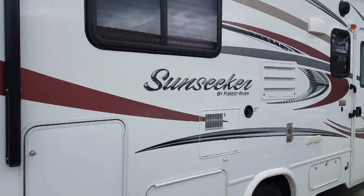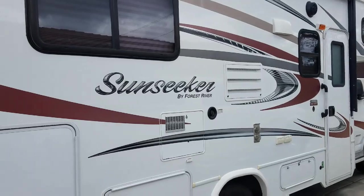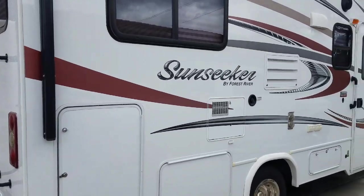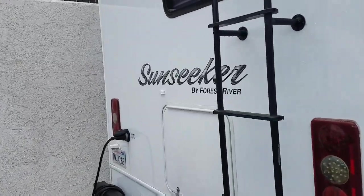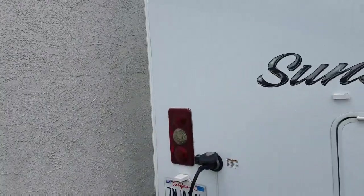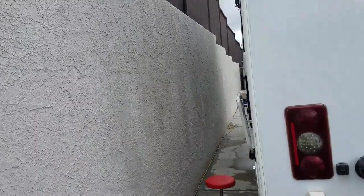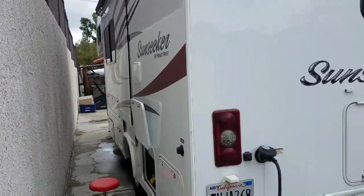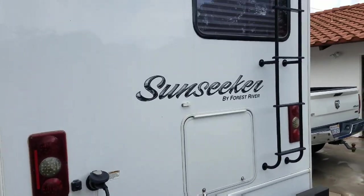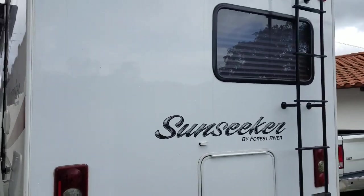Okay, this is our Sunseeker by Forest River. It's a Class C and it's about three years old. We bought a newer model than the year. Lots of problems, I'm sure anybody who's bought a new motorhome goes through the same thing.